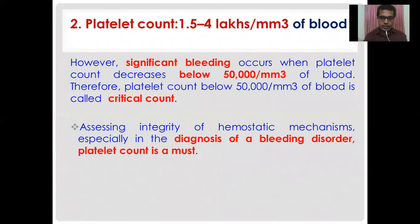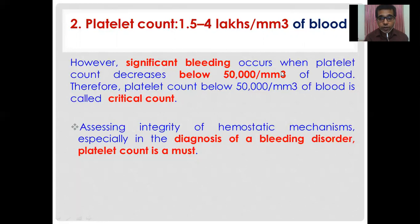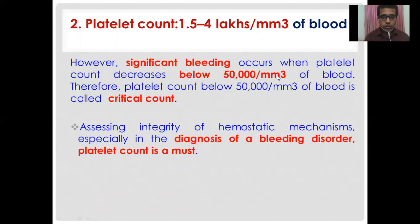Another important test is the platelet count. The normal count is 1.5 to 4 lakhs per cubic millimeter of blood. Significant bleeding may occur when the platelet count decreases below 50,000 per cubic millimeter of blood. When the platelet count falls below 20,000 per cubic millimeter, the patient experiences spontaneous bleeding — this is considered the critical count.